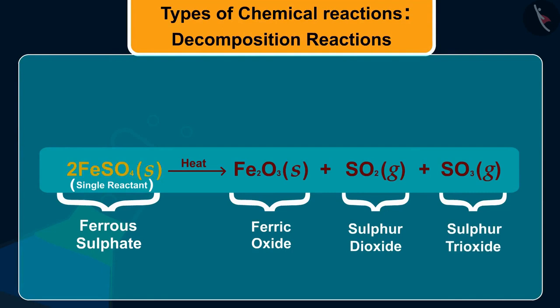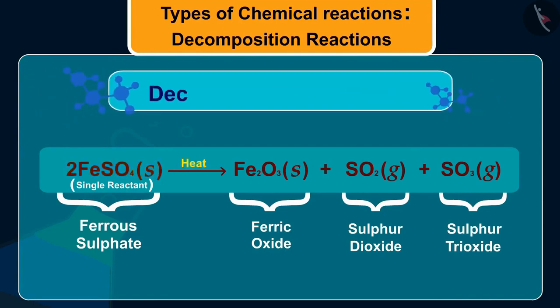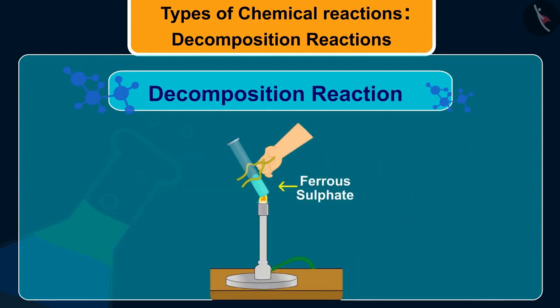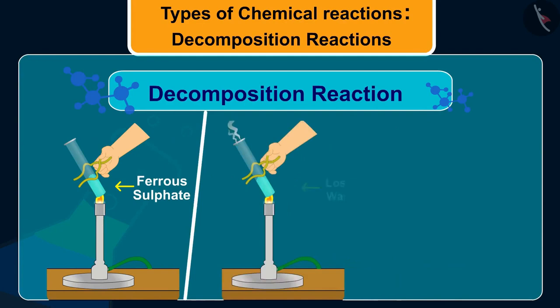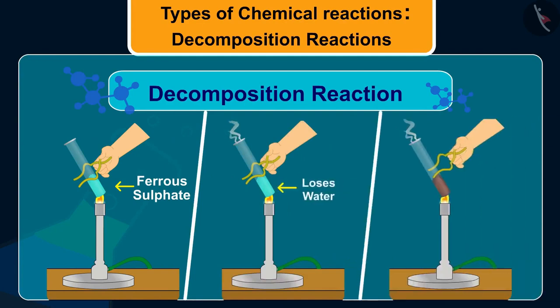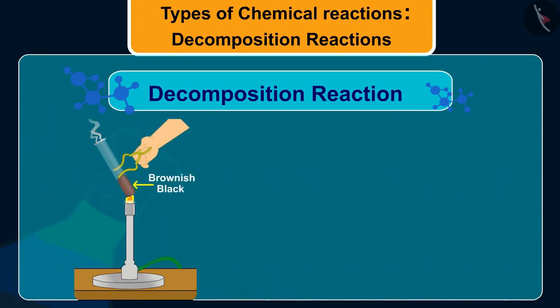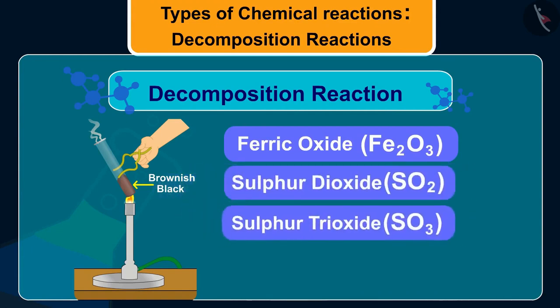Ferrous sulfate crystals FeSO4·7H2O lose water when heated and the color of the crystals changes. It then decomposes to ferric oxide Fe2O3, sulfur dioxide SO2 and sulfur trioxide SO3.